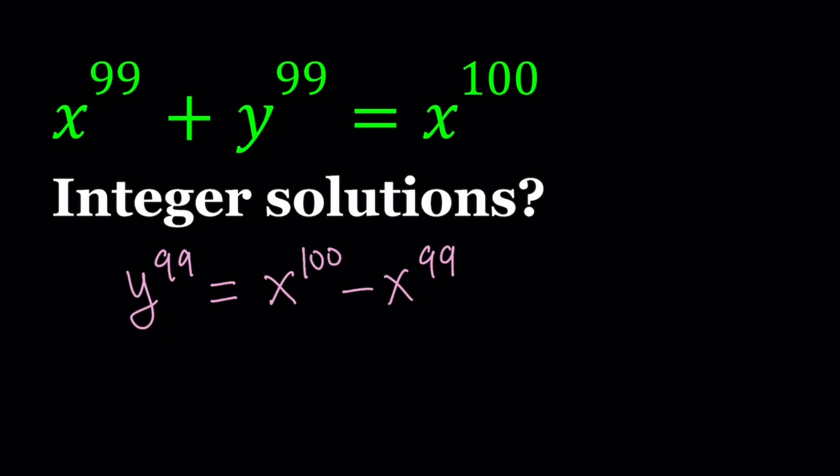Don't let 100th power and 99th power scare you because factoring this polynomial or binomial is going to be fairly easy. We're going to go with the greatest common factor, which is x to the power 99. Okay, so let's go ahead and take out x to the power 99. And remember, x to the power 100 contains x to the power 99. It's actually x to the 99th times x.